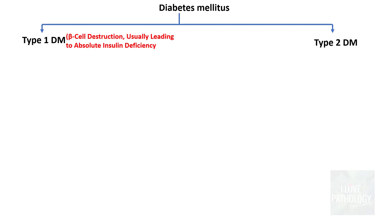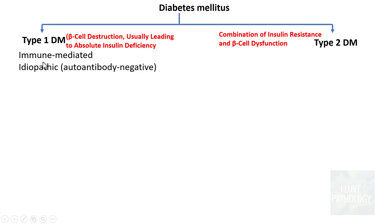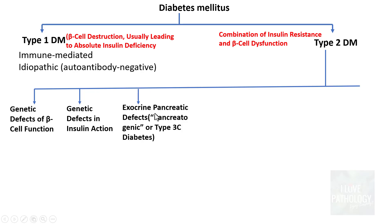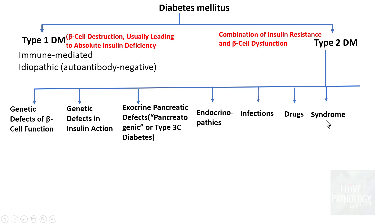Looking at the detailed classification: Type 1 is immune-mediated or idiopathic (autoantibody-negative). Type 2 and other specific types can be caused by genetic defects of beta cell function, genetic defects in insulin action, exocrine pancreatic defects (also called pancreatogenic or type 3c diabetes), endocrinopathies, infections, certain drugs, syndromes associated with diabetes, and gestational diabetes mellitus occurring in pregnancy.